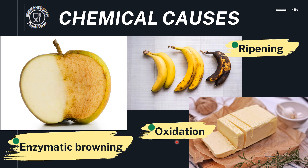The second chemical cause is oxidation, mainly seen in foods high in lipids. Foods like butter or cheese, if exposed to oxygen and light for a long period of time, have their enzymes react and oxidize the fats or lipids, leading to a rancid odor. This is called enzymatic oxidation, which leads to rancid odor or essentially spoilage of that particular fatty food.